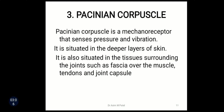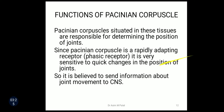The third one is Pacinian corpuscle. Pacinian corpuscle is a mechanoreceptor that senses pressure and vibration. It is situated in the deeper layers of skin, and also in the tissues surrounding the joints such as fascia over the muscle, tendons and joint capsule. Pacinian corpuscles situated in these tissues are responsible for determining the position of joints. Since Pacinian corpuscle is a rapidly adapting receptor, it is very sensitive to quick changes in the position of joints, and is believed to send information about joint movement to the central nervous system.